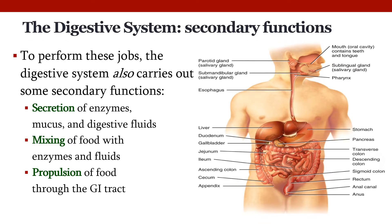These four general functions of the digestive system are assisted by some secondary functions: secretion, mixing, and propulsion. Secretion refers to the secretion of enzymes for chemical digestion, mucus to protect and lubricate the digestive system, and other digestive fluids. Mixing is important because enzymes and fluids won't work efficiently if not properly mixed with food — you'll only get partial digestion without thorough mixing. Finally, propulsion is the movement of food or partially digested food consistently through the GI tract.